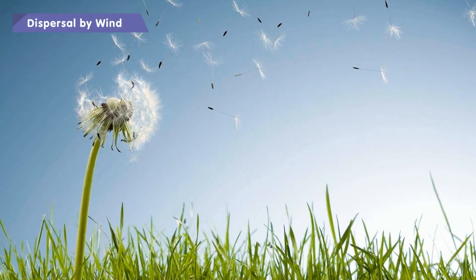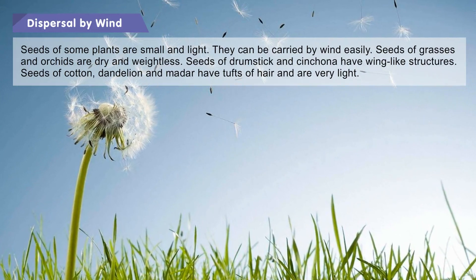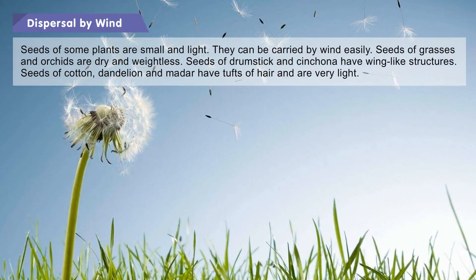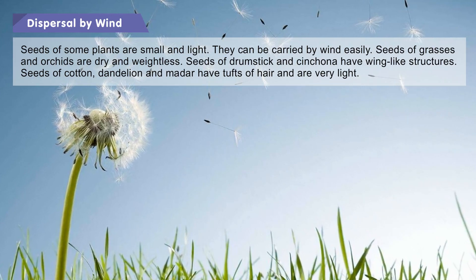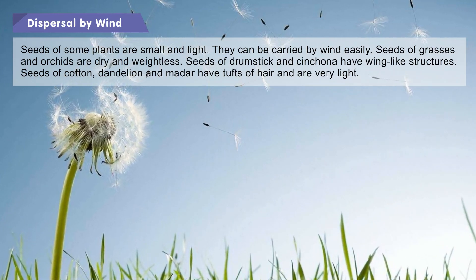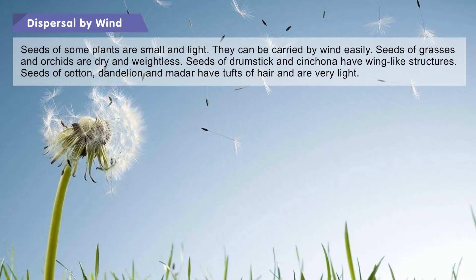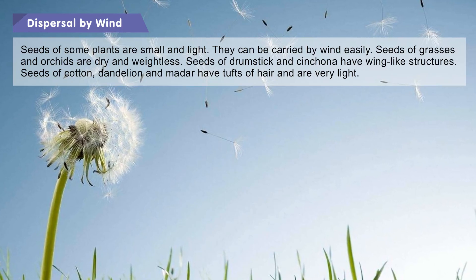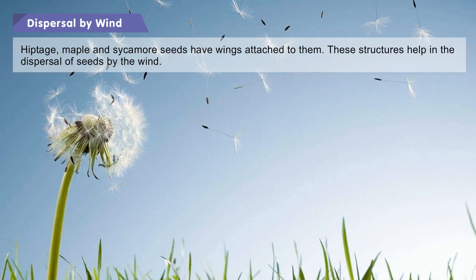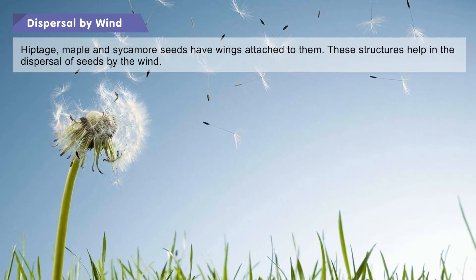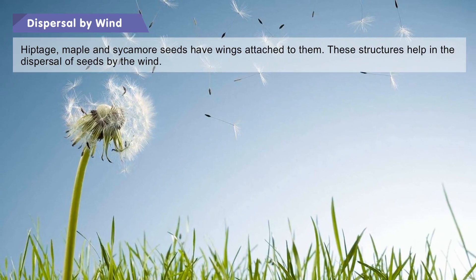Dispersal by wind: Seeds of some plants are small and light, and can be carried by wind easily. Seeds of grasses and orchids are dry and weightless. Seeds of drumstick and cinchona have wing-like structures. Seeds of cotton, dandelion, and madar have tufts of hair and are very light. Hyptage, maple, and sycamore seeds have wings attached to them. These structures help in the dispersal of seeds by the wind.